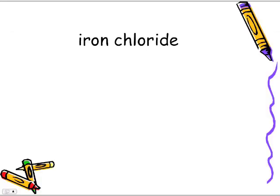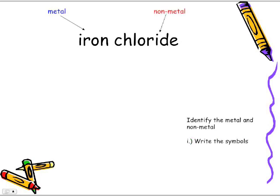Now let's look at iron chloride. We've already established the idea of how to write chemical formulas. First and foremost, we need to identify the metal and the nonmetal. When we look at the periodic table, iron is the metal, chloride is the nonmetal. Once we've identified metal and nonmetal, we need to go about using the five-step crossover rule to come up with the chemical formula.